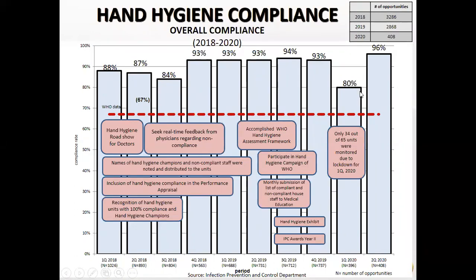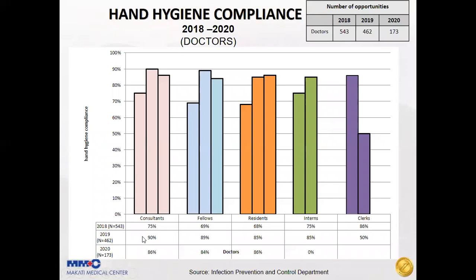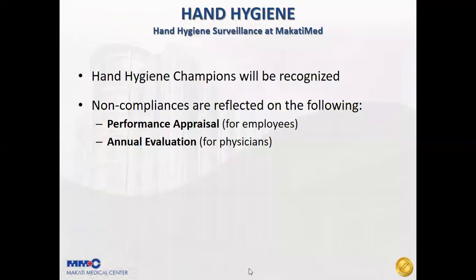Hand hygiene is still one of the key measures to prevent COVID-19 transmission. For professional categories in the first two quarters of 2020, nurses, doctors, auxiliaries, and other healthcare workers all achieved above 95% compliance. Among doctors, consultants and residents were the most compliant. Hand hygiene champions are recognized at the end of the year with certificates signed by the department manager, ICC chairman, and medical director, along with a token of appreciation. Non-compliance is reflected in performance appraisals for employees and annual evaluations for doctors.